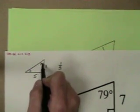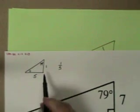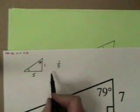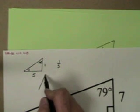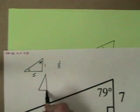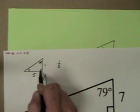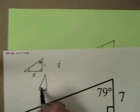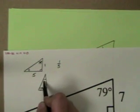Well if this angle up here is 79 degrees I could rotate this triangle so it looked like this. This would be my 79, this would be my 11.